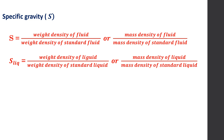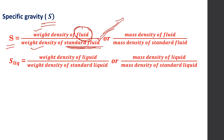The last property today is specific gravity, represented by S. Specific gravity is the ratio of weight density of a fluid to the weight density of a standard fluid. Normally the standard fluid is taken as water. It can also be expressed as the mass density of the fluid divided by the mass density of the standard fluid.